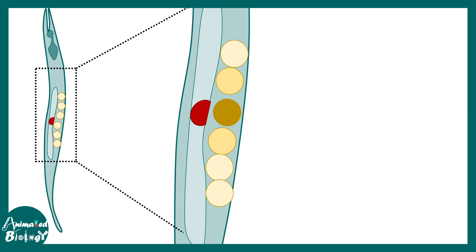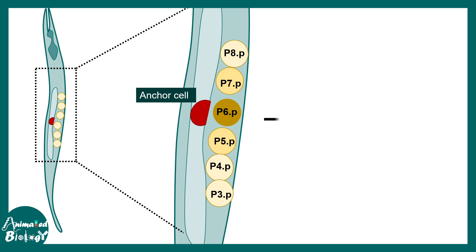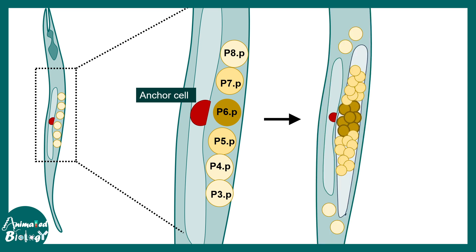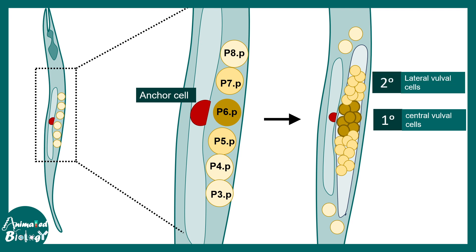All these VPCs are named by specific nomenclature. The VPC exactly adjacent to the anchor cell is P6.p, and going outward: P7.p, P8.p, etc. Eventually these cells give rise to different cell types. The cells in the vicinity of the anchor cell become the central vulval cells; cells a bit further away take the fate of secondary or lateral vulval cells; and the cells furthest apart take the fate of hypodermal cells.